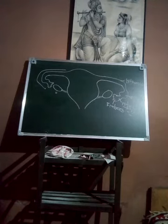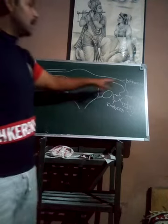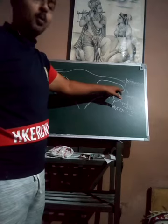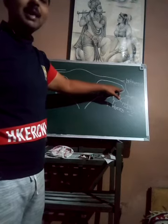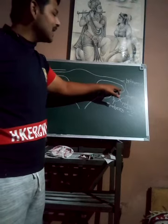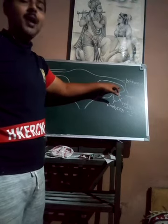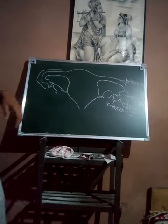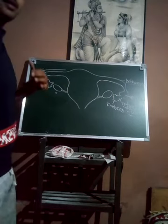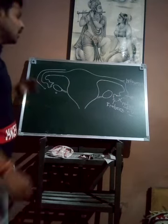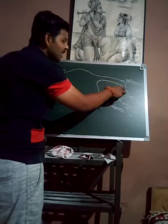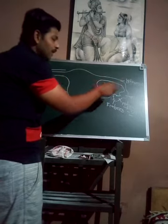The isthmus and ampulla have a junction called the ampullary-isthmic junction. This is the part where fertilization takes place — during reproduction, sperm travel and reach the ampullary-isthmic junction where fertilization occurs.